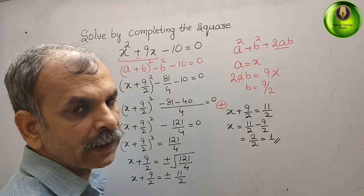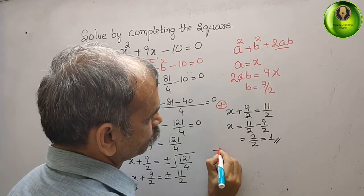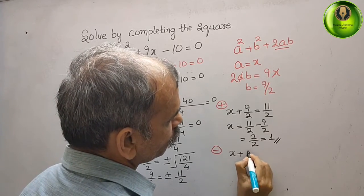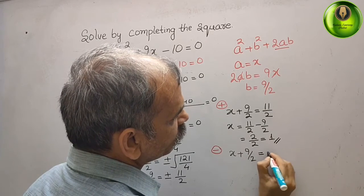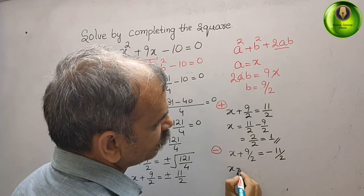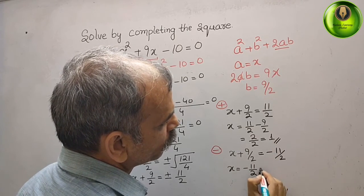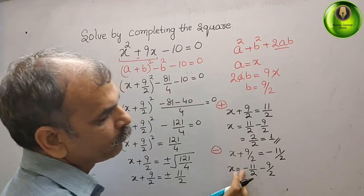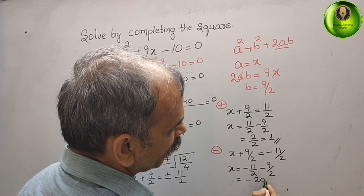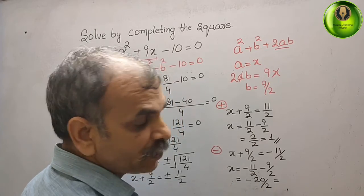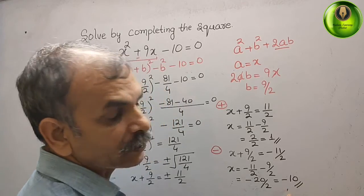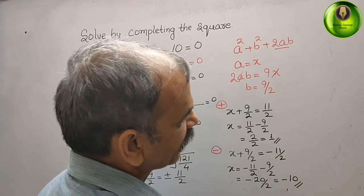For the second case we take minus: x + 9/2 equals minus 11 by 2. Bring 9/2 to the right side — x equals minus 11 by 2 minus 9 by 2. Minus 11 minus 9 is minus 20, so x equals minus 20 by 2, which equals minus 10. So the second solution is minus 10. The solutions are x equals 1 and x equals minus 10.